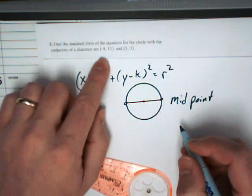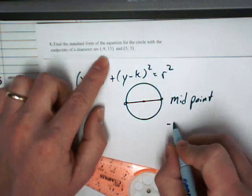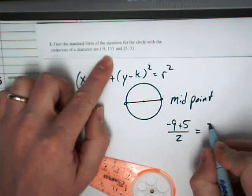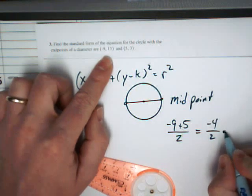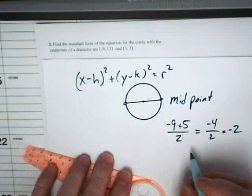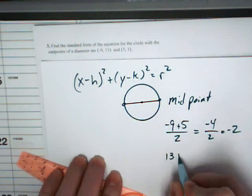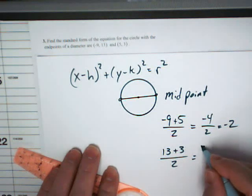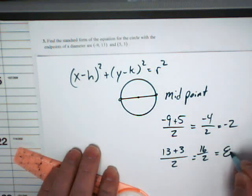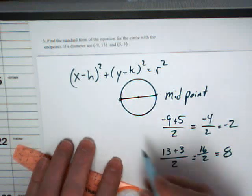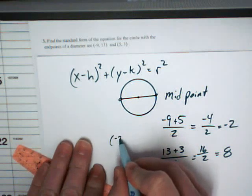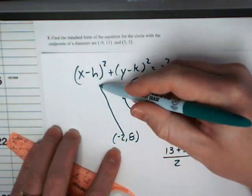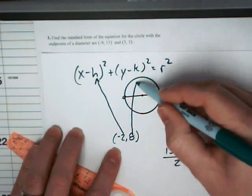And you average the x values, which would be negative 9 plus 5 divided by 2. And then you average the y values. So, that would be 16 over 2, which is 8. So, the midpoint is negative 2, 8. That's the center. And this negative 2 goes in with h, and this 8 goes up here with the k.